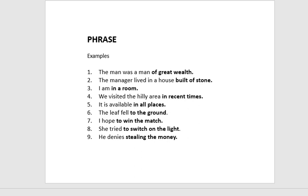Example seven: 'I hope to win the match.' Here 'I' is the subject and 'hope' is the main verb. 'To win the match' is a phrase — 'to win' is an infinitive phrase, not a verb. Example eight: 'She tried to switch on the light.' Here 'to switch on the light' is a phrase, just like example seven. Example nine: 'He denies stealing the money.' Here 'stealing the money' is a phrase — 'stealing' is a gerund, not a verb. 'He' is the subject and 'denies' is the verb of this sentence.